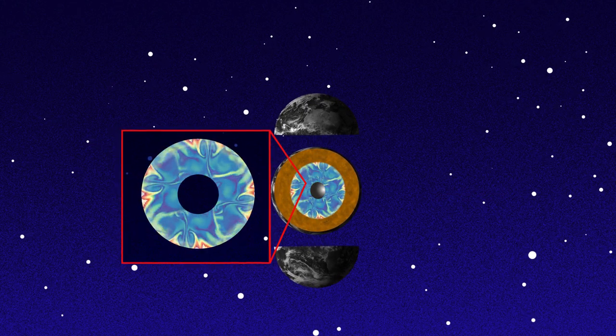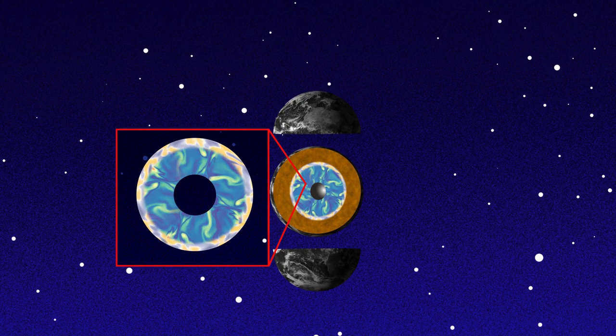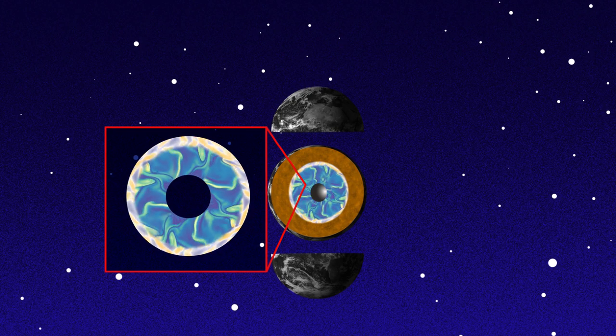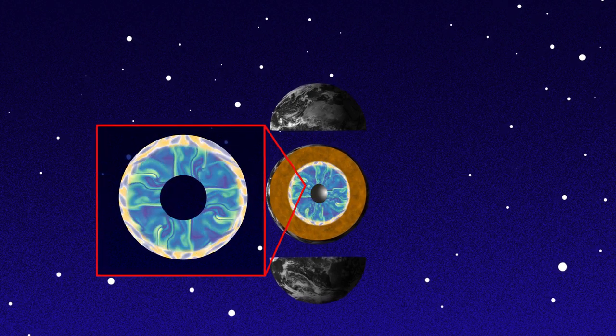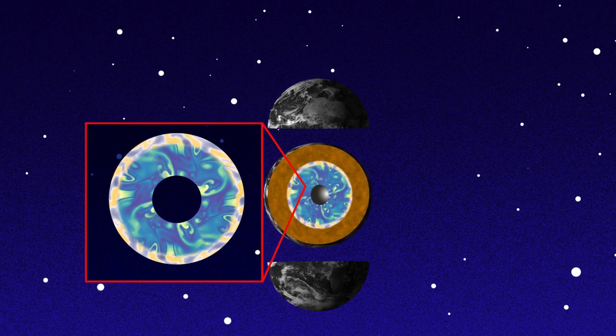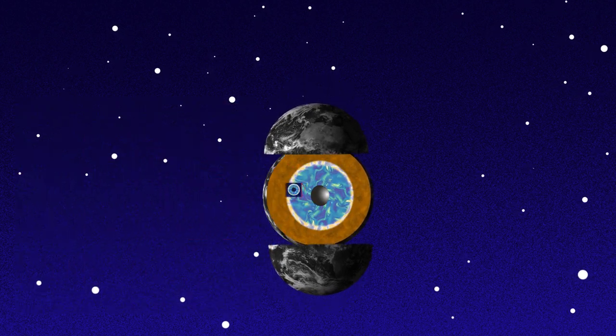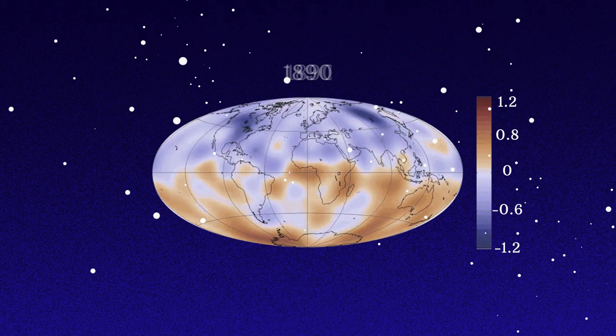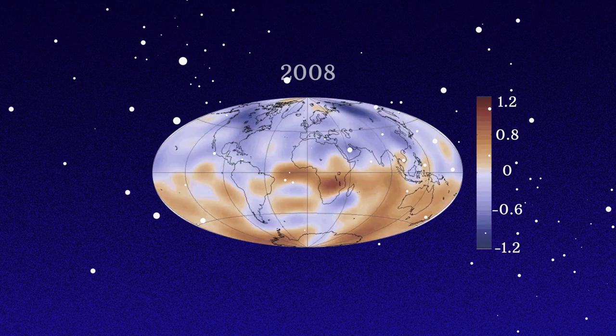Due to its thermodynamical properties and the presence of light elements, the upper part of Earth's core might be stably stratified. Waves generated by the turbulent convective flow below can propagate within this stratified layer and affect its long-term dynamics. Signatures of this propagation can even be observed in the temporal evolution of the Earth's magnetic field.